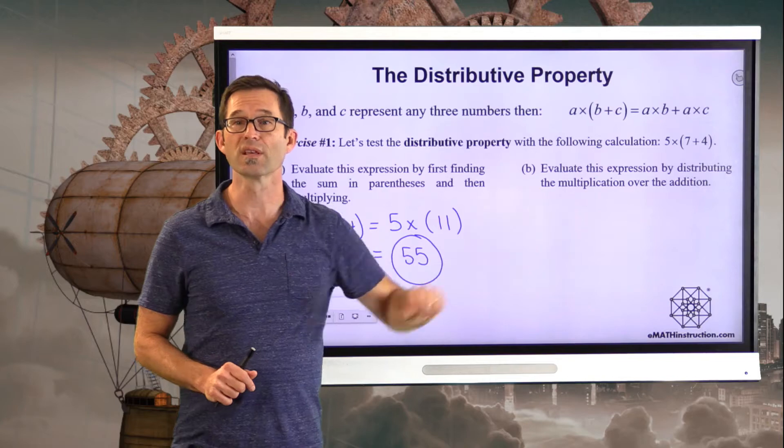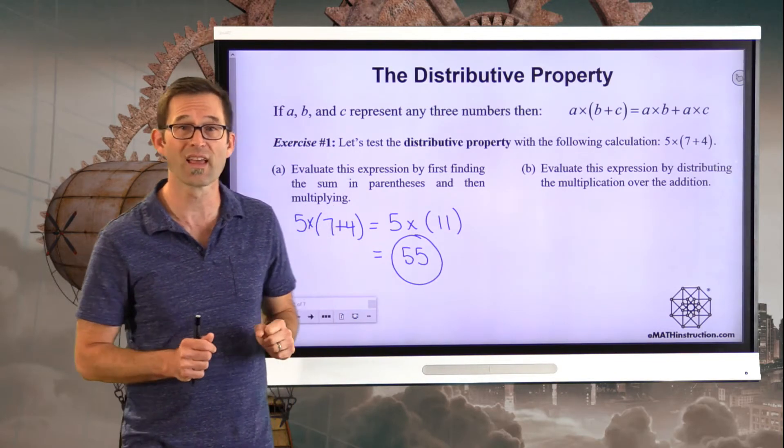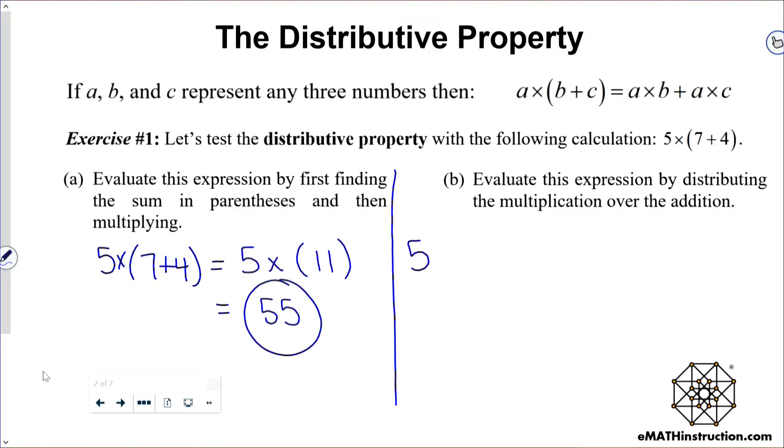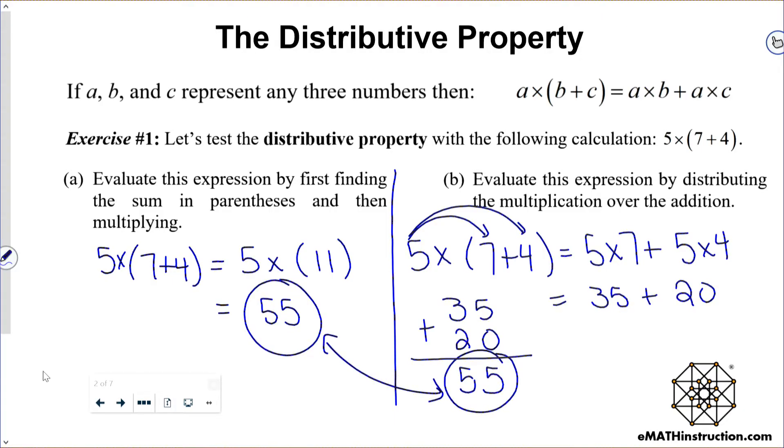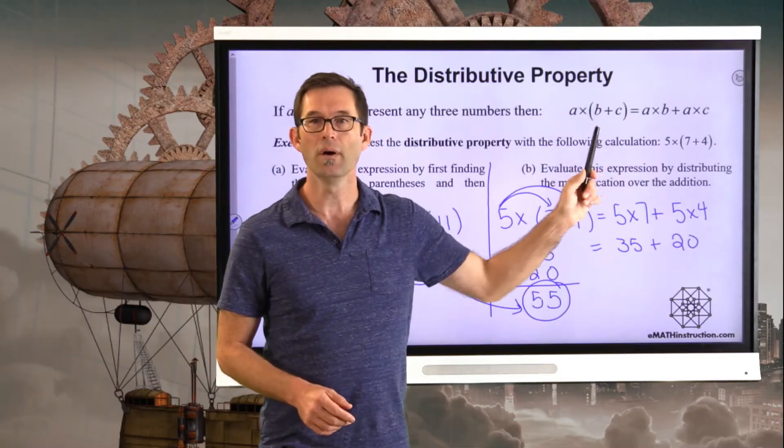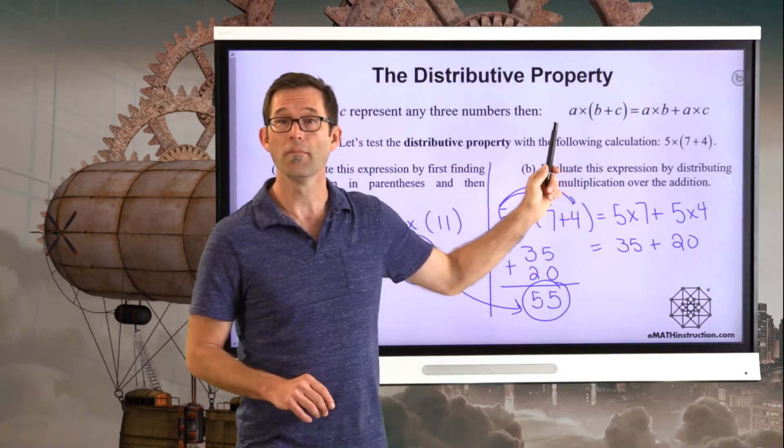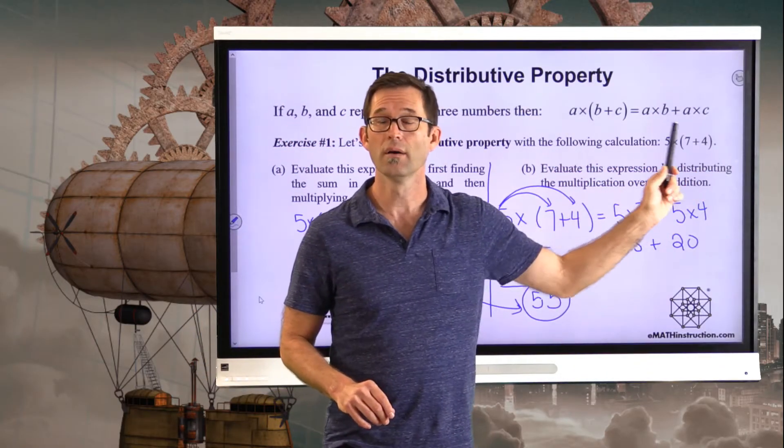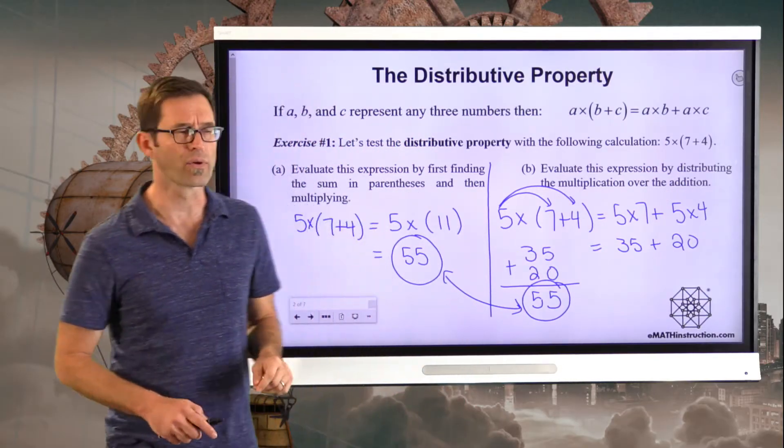Letter B says evaluate this expression by distributing the multiplication over the addition. So let's do that together. The distributive property says I can actually do this calculation in a different way. I can do this calculation by distributing the multiplication by 5, and I can do 5 times 7 plus 5 times 4. 5 times 7 is 35, 5 times 4 is 20. And if I do 35 plus 20, I find that that is also 55. So just a little reminder of the distributive property. If I'm multiplying a sum, and it also works with differences, I can multiply each part of that sum by the number and then add at the end.